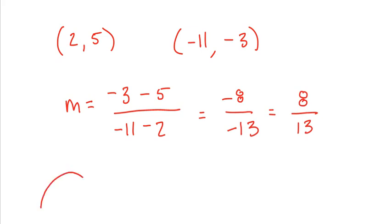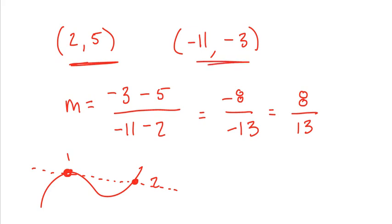So if I had a function, with point 1 here and point 2 here, the average rate of change would be the slope between those two points. From point 1 to point 2, I clearly have moved down — that's a negative rate of change. The average rate of change between the two points would be 8 over 13. That requires zero calculus. That is just old school algebra.